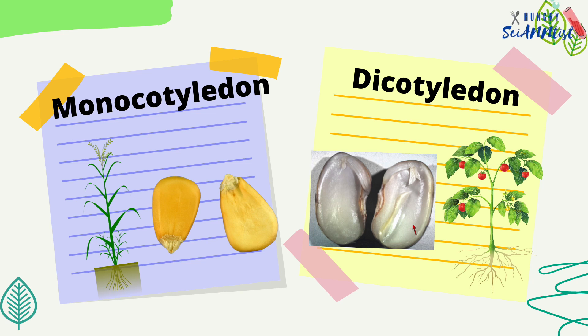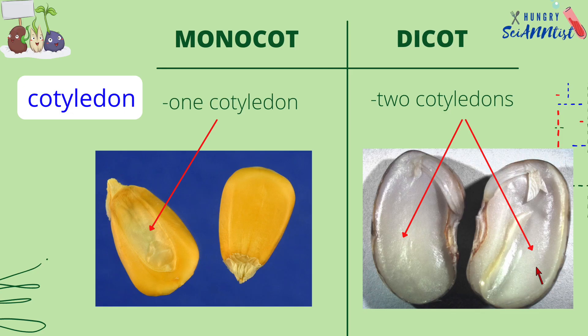In this video, we will learn the differences between monocotyledon and dicotyledon. Monocot has one cotyledon, while dicot has two cotyledons.